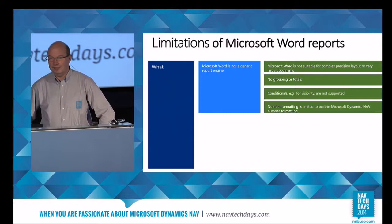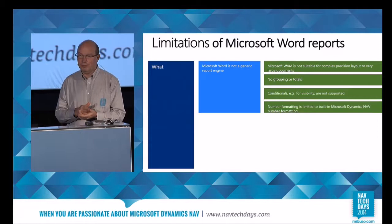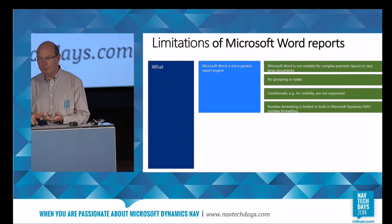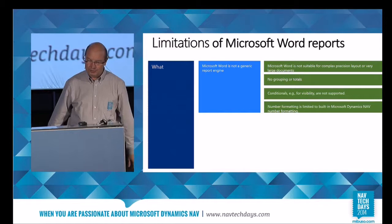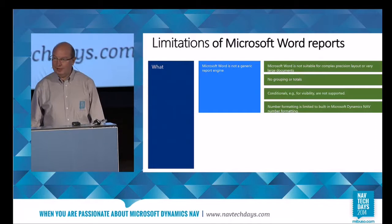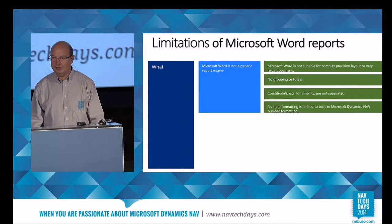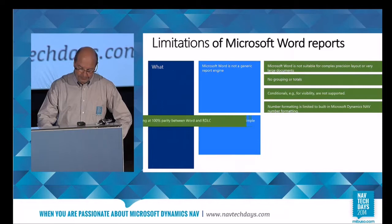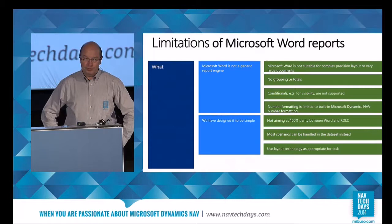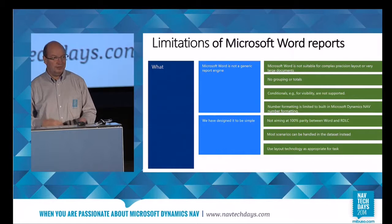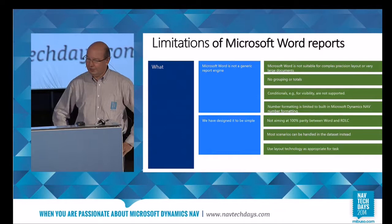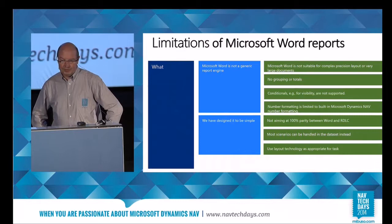Basically, what Word is, is a notepad with some extra formatting. There are essentially three controls you can use: a text control, a picture control, and a repeater. That's all you have. There's no grouping of totals, no conditionals, nothing to control visibility, and number formatting is done server-side since they're only text fields, so you cannot control that in Word. But we really designed it to be simple — deliberately. We didn't want to parallel RDLC, so RDLC is for when you want to create something complex, whereas if you want a simple document layout, you'd probably want to use Word.